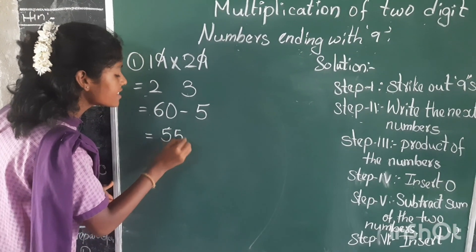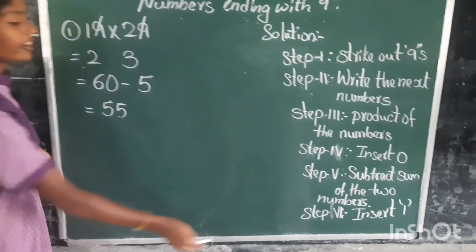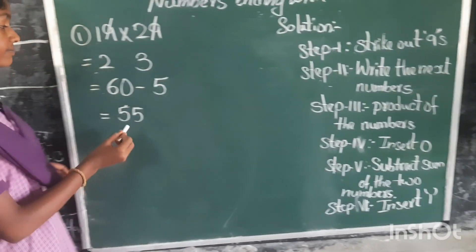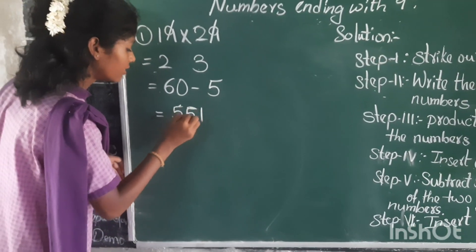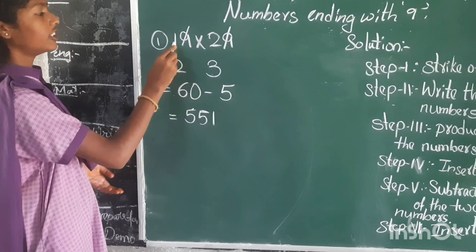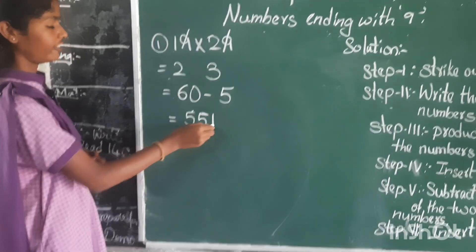The last and final step is we need to insert 1. The product of these two numbers is 551.